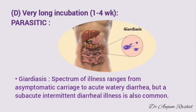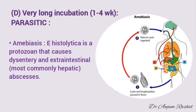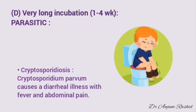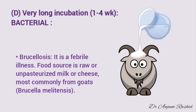The fourth group of foodborne diseases has a very long incubation period, that is 1 to 4 weeks. Parasitic infections include Giardia — a spectrum of illness ranging from asymptomatic carrier state to acute watery diarrhea, though subacute and chronic diarrheal illness is also common. Second is amoebiasis, caused by Entamoeba histolytica, a protozoan that causes dysentery and extra-intestinal manifestation, especially hepatic abscess. Third is cryptosporidiosis, caused by Cryptosporidium parvum, which causes a diarrheal illness with fever and abdominal pain. Foodborne bacterial disease in this group includes brucellosis, caused by Brucella melitensis — a febrile illness whose food source is raw or unpasteurized milk or cheese, most commonly from goats.